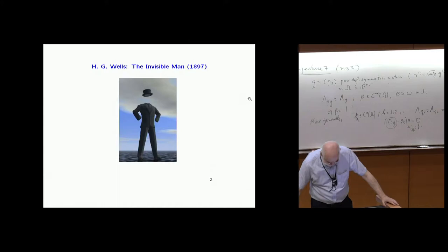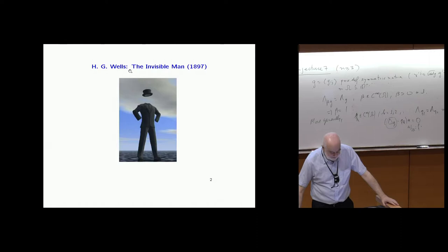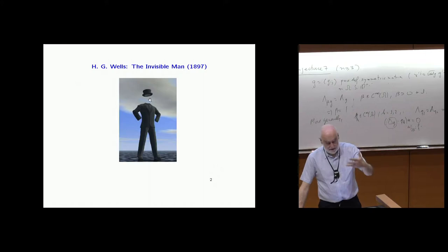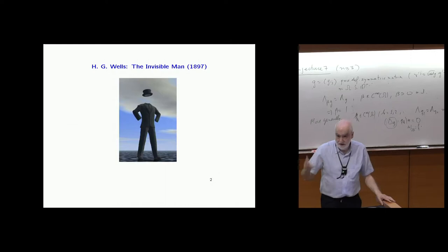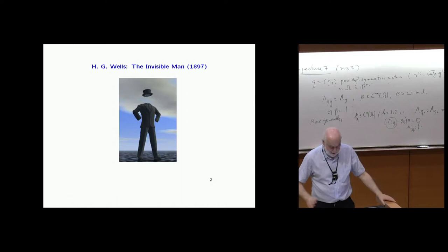The first clip is from H.G. Wells's Invisible Man — he makes himself invisible by a chemical procedure that changes his index of refraction to match that of air, so rays of light go straight through. The way you see something is by the reflection of light in the retina of your eyes. If the rays of light don't reflect, you don't see anything.